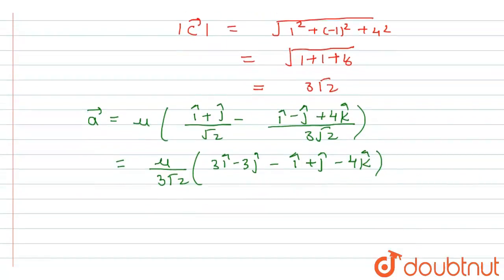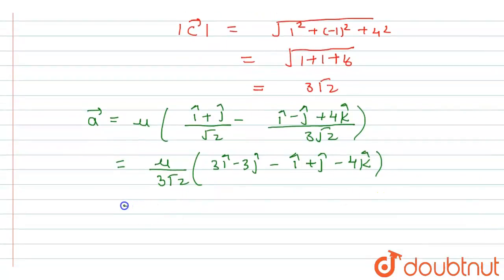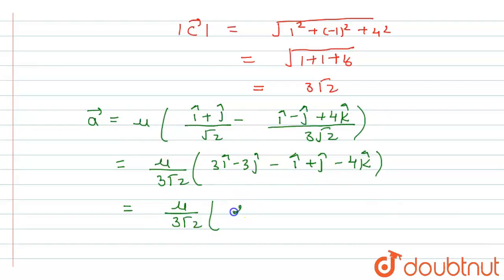Simplifying this, we get μ/(3√2) times (2î − 2ĵ − 4k̂).